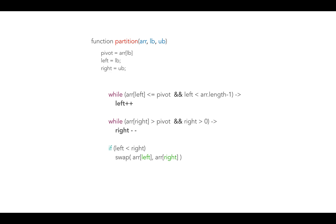The moment the right pointer crosses the left pointer, we perform a final swap — we swap the element at the right pointer with the pivot element to place the pivot at its correct index. Then we return the pivot index for the current iteration.